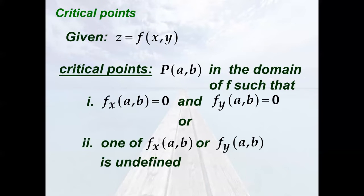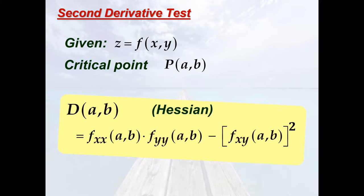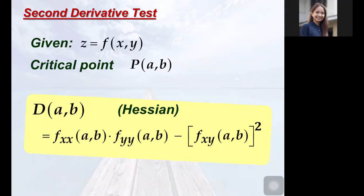After finding the critical points, we evaluate whether these are indeed extrema. We are going to do that using the second derivative test. In this case, we will do a little more computation. We compute the Hessian determinant, which is given by the second order partial with respect to x multiplied by the second order partial with respect to y, both evaluated at the point AB, minus the square of the second order partial with respect to x and y, evaluated at the point AB.